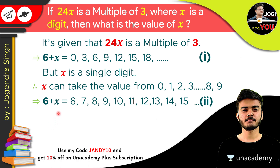Because if x goes from 0 to 9: 6 plus 0 is 6, 6 plus 1 is 7, 6 plus 2 is 8, 6 plus 3 is 9, 6 plus 4 is 10, and taking the biggest value, 6 plus 9 is 15. So according to the first equation, the possible values were unlimited, but according to the second condition, 6 plus x can only be from 6, 7, 8, 9, 10, 11, 12, 13, 14, or 15.